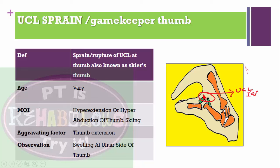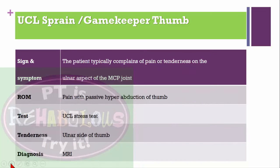Ulnar collateral ligament injury, also known as gamekeeper's thumb or skier's thumb: defined as sprain or rupture of the ulnar collateral ligament at the thumb. Mechanism of injury is hyperextension or hyperabduction of the thumb. Aggravating factor is thumb extension. Swelling is seen at the ulnar aspect of the thumb. Patient complains of pain and tenderness on the ulnar side of the metacarpophalangeal joint. Pain with passive hyperabduction of the thumb. Ulnar collateral ligament stress test is positive. Diagnosed with MRI.